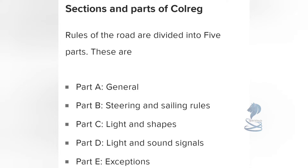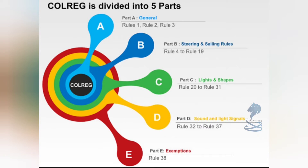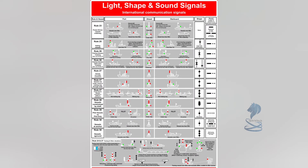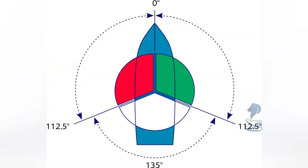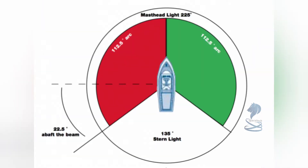The sections and parts of COLREG are as such: COLREG's Rules of the Road are divided into 5 parts. Part A, General, includes Rules 1, 2, and 3. Part B, Steering and Sailing Rules, includes Rules 4 to 19. Part C, Lights and Shapes, includes Rules 20 to 31. Part D, Sound and Light Signals, includes Rules 32 to 37. And Part E, Exceptions, includes Rule 38.